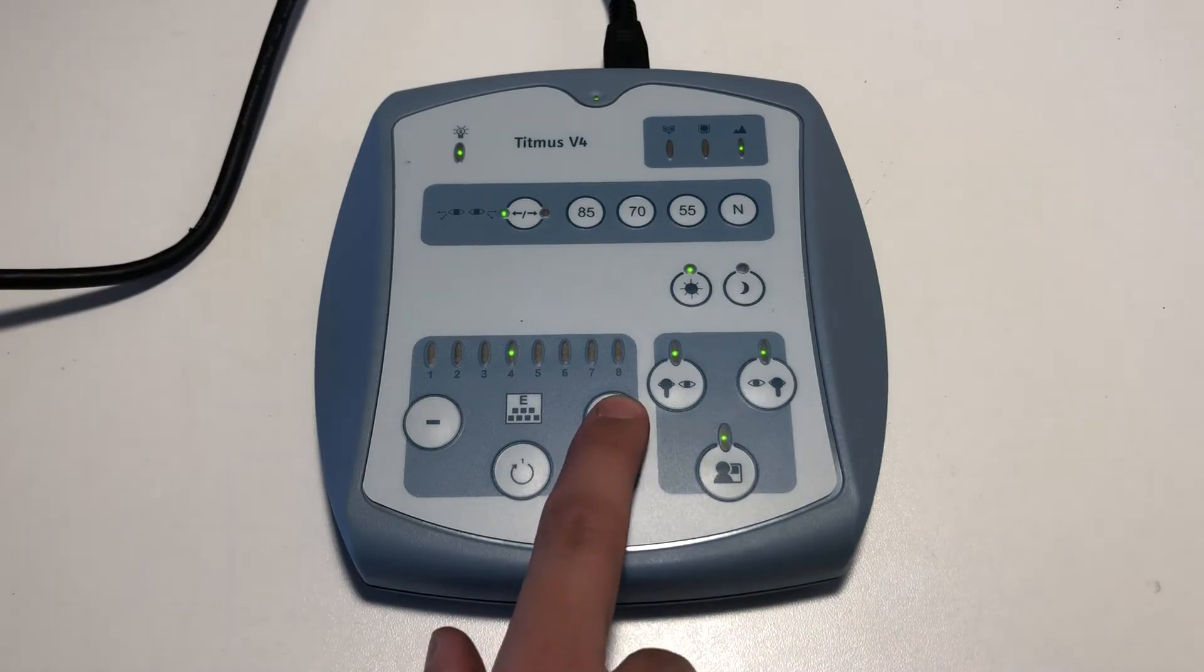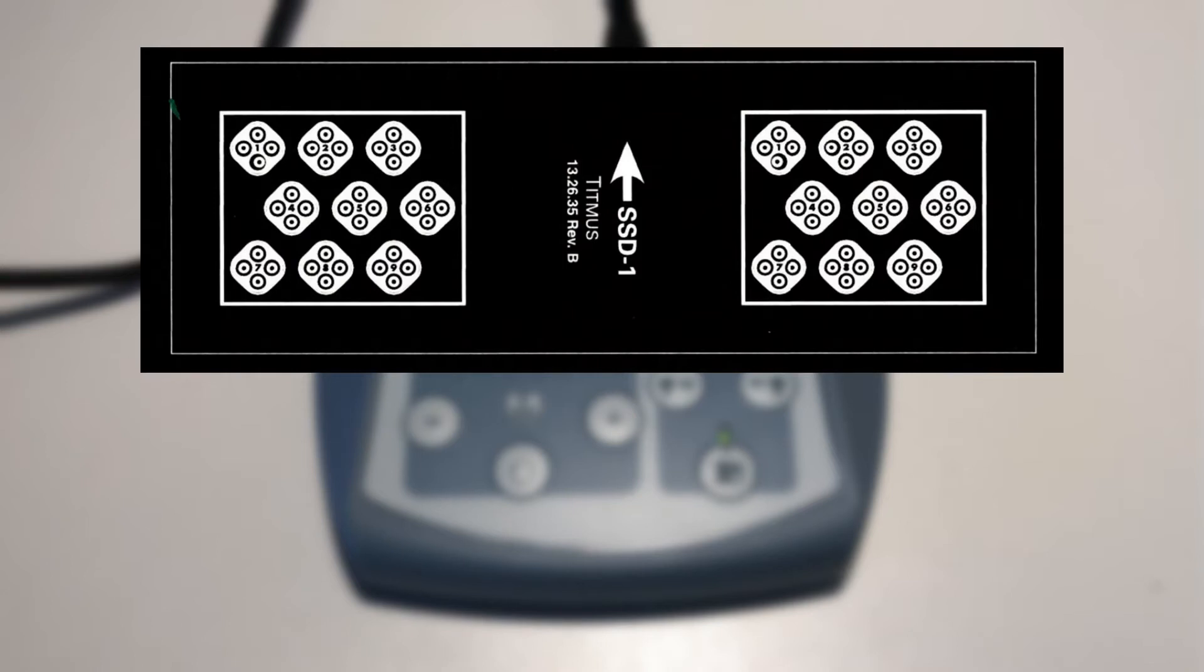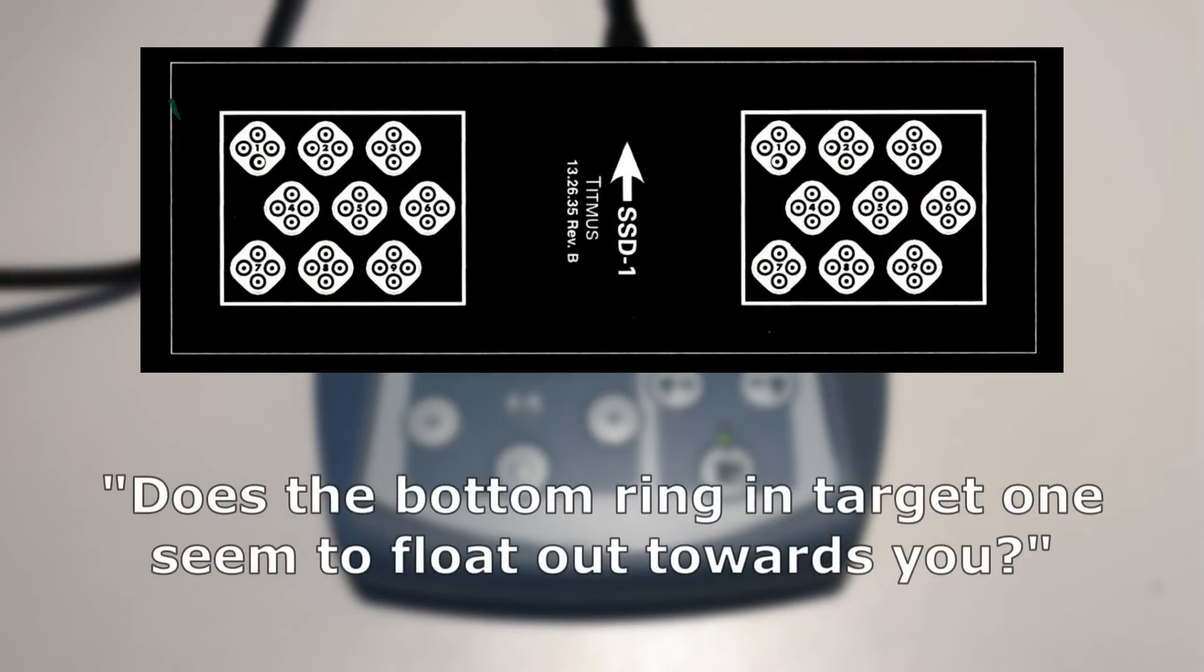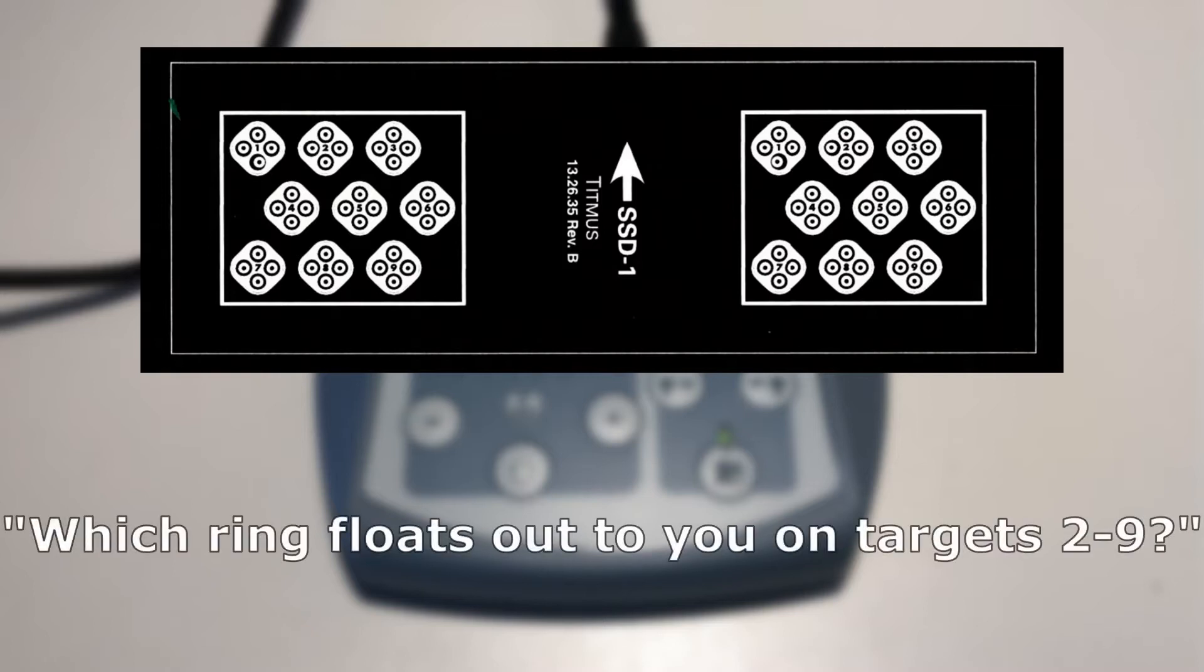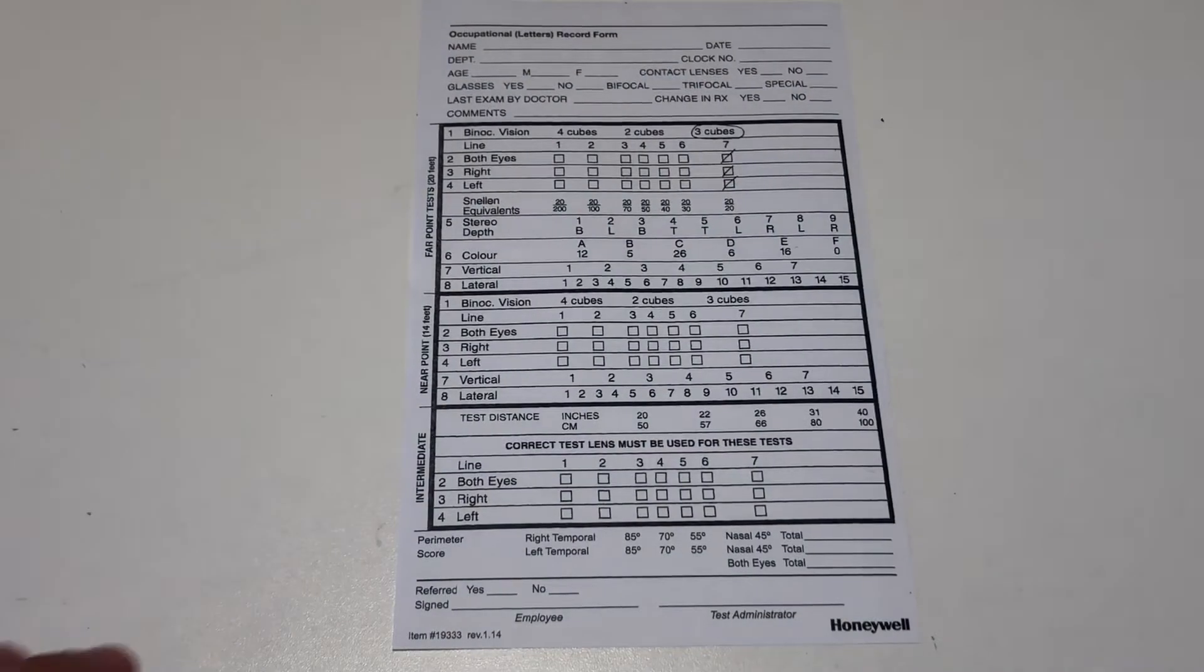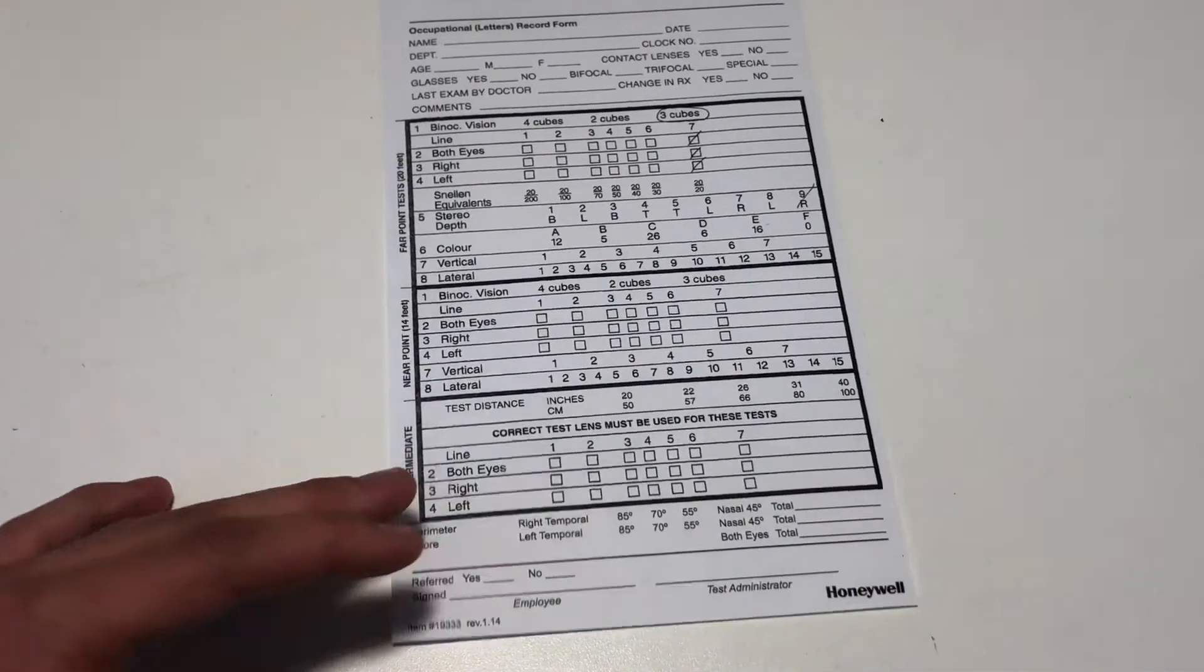Advance the slide to number five. This slide tests for depth perception. Ask the patient, does the bottom ring in target one seem to float out towards you? If no, move on to slide number six. If yes, say to the patient, tell me which ring floats out towards you on target two. Repeat for all nine targets and record the results by putting a slash through the last correct answer.